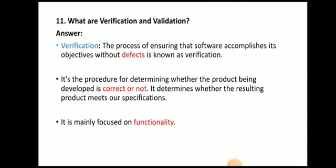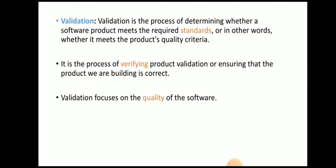What are verification and validation? Verification is the process of ensuring that the software accomplishes its objectives without defect. It determines whether the resulting product meets specifications and is mainly focused on functionality. Validation is the process of determining whether a software product meets required standards and product quality criteria. Validation focuses on the quality of the software.